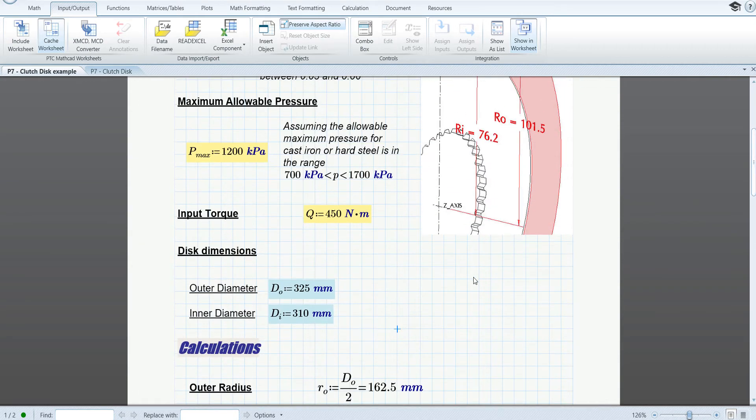Specifically, the input conditions we're interested in here are the inner and outer diameter of the specific disk used. This worksheet is set up for one disk.